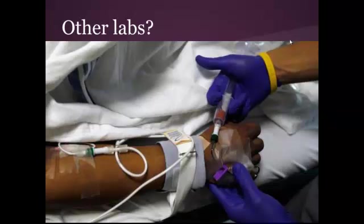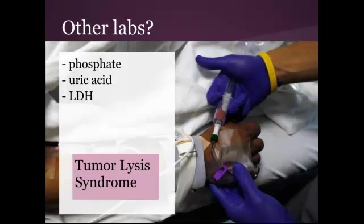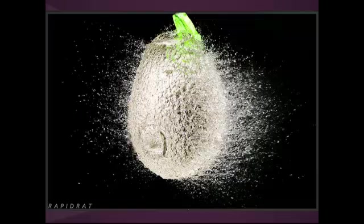Let's start off with some labs — is there anything else you'd like to draw? How about a phosphate, uric acid, and LDH? And we'll send those out to lab. What are we considering right now with this patient who has just had chemo, has hyperkalemia, and a new acute kidney injury? Tumor lysis syndrome.